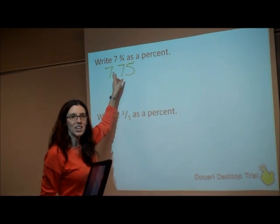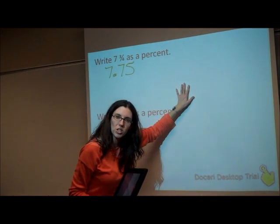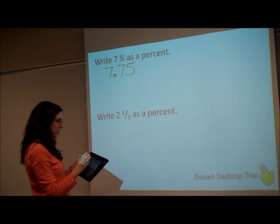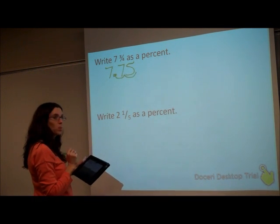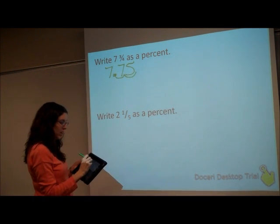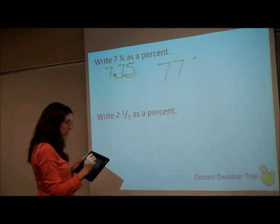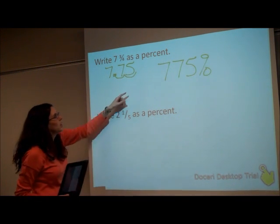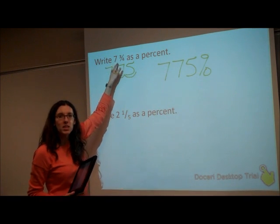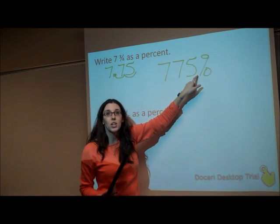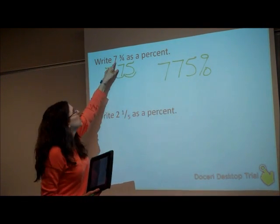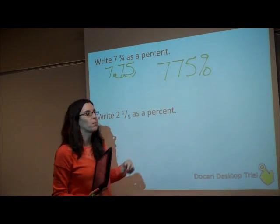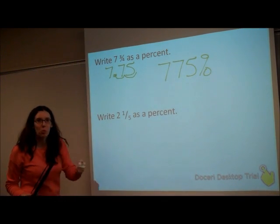Now, changing a decimal to a percent, we need to multiply by 100, or move our decimal two places to the right. So this would be 775%. If you have a mixed number, you should have a percent greater than 100 — and notice this big number is in the hundreds place. So now try this one and press play when you're ready.